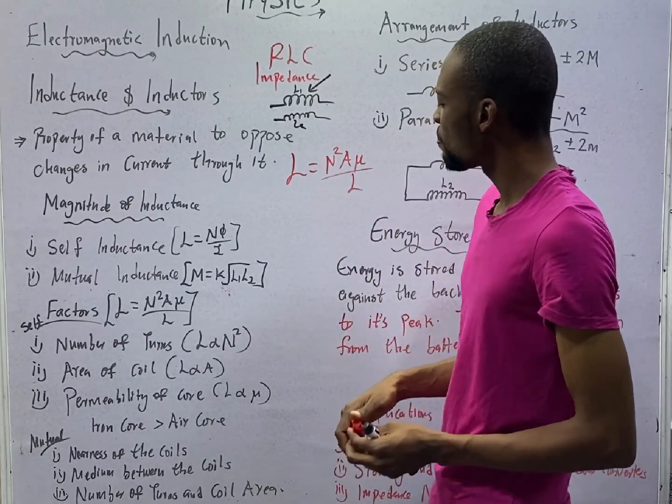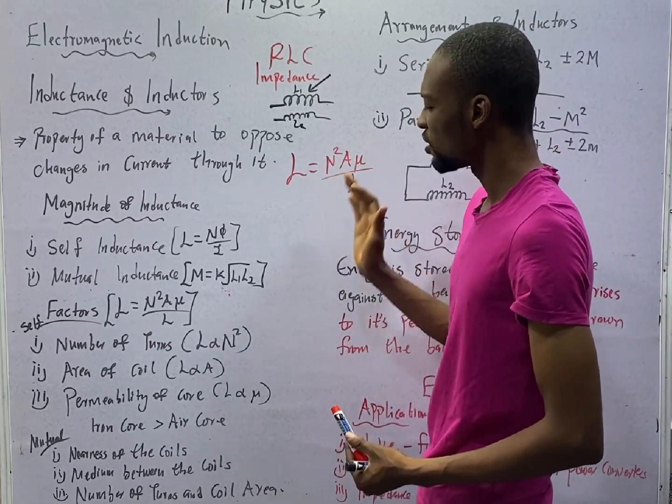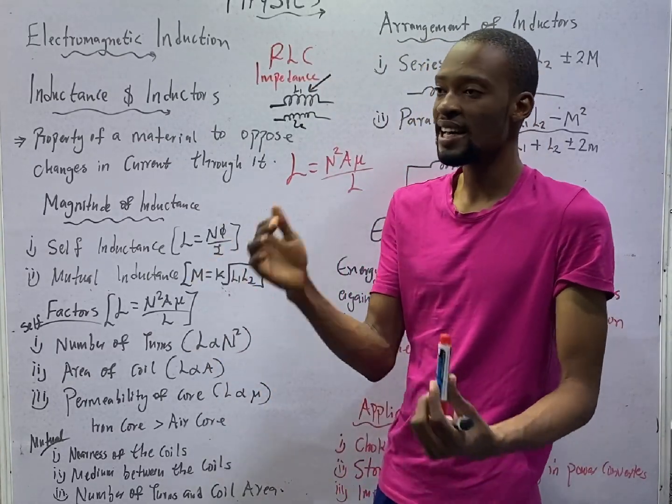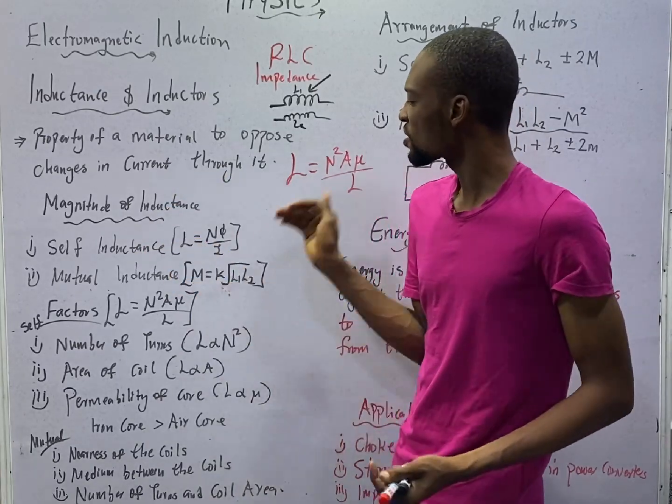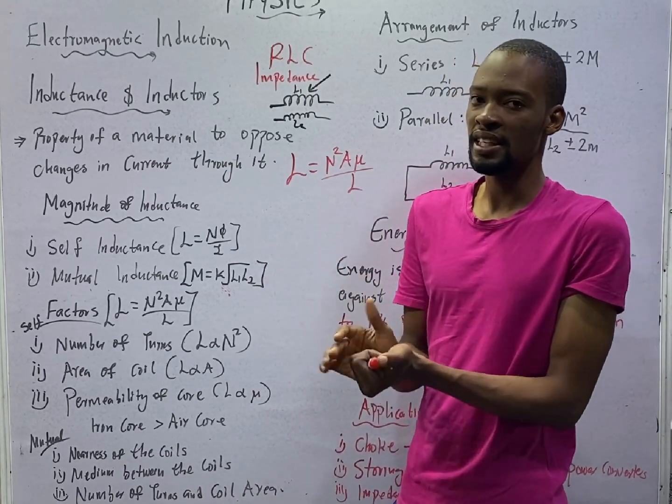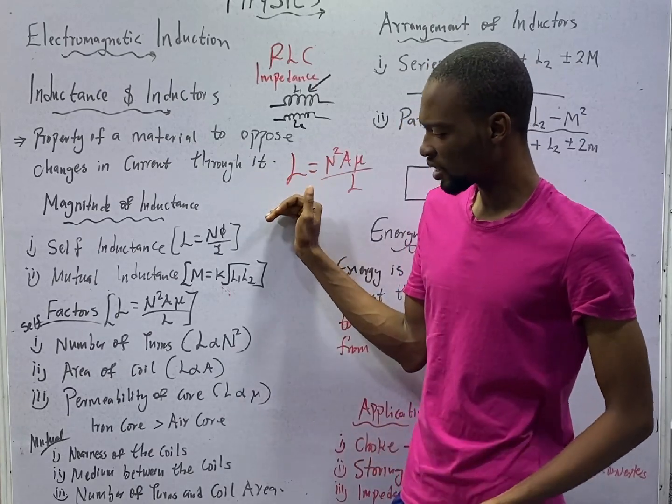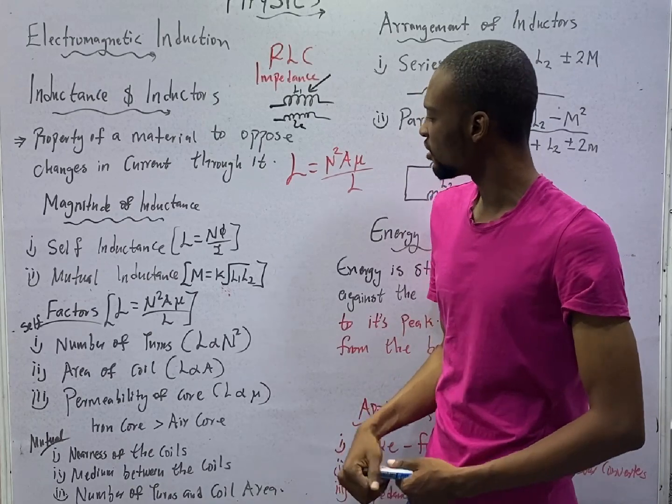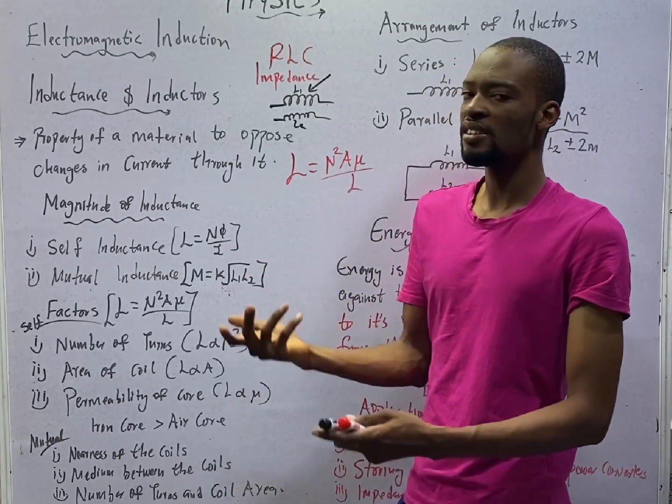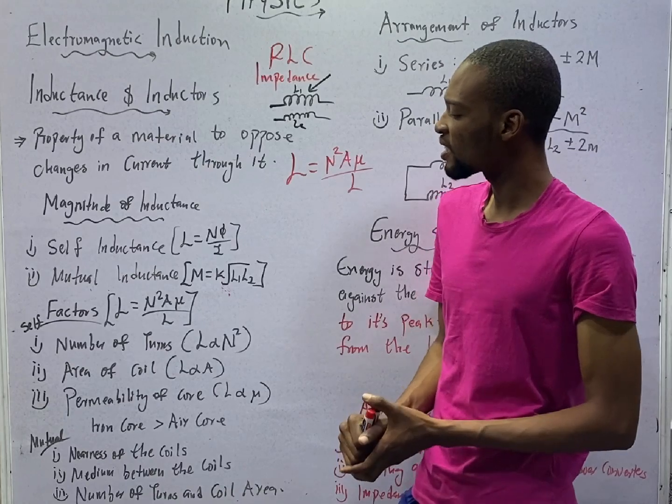If the permeability of the core is bigger, the inductance will be more. This is what I am trying to say. Iron core will have more inductance or self-inductance than air core. Because the permeability of the air core is thicker. So, the thicker the permeability, the more the self-inductance. Area of the coil. Self-inductance is proportional to area of the coil. As the area increases, the self-inductance will increase.